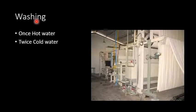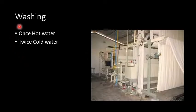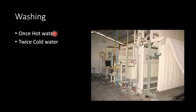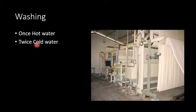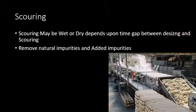उसके बाद washing है। Scouring की requirement है कि सबसे पहले fabric को wash करें। Fabric wash करने के बाद उसे scouring process के लिए ले जाएंगे। Washing का तरीका है: एक बार गरम पानी से wash करना (once hot water), उसके बाद दो बार ठंडे पानी से (twice cold water)। Scouring process alkaline condition में की जाती है जिसमें natural impurities remove होती हैं।